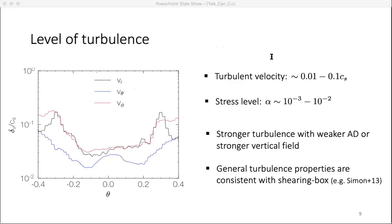We examine the turbulent level in the disk, and the plot shown here has root mean square of velocity over sound speed as a function of theta. The turbulent velocity in our simulations ranges from 0.01 to 0.1. The stress level, the dimensionless alpha parameter, is on the order of 10^-3 to 10^-2, and it's Maxwell stress that dominates over Reynolds stress. We find that strong magnetic field or weak ambipolar diffusion will produce strong turbulence, and all these results are consistent with local shearing box simulations.